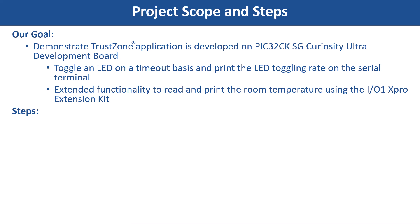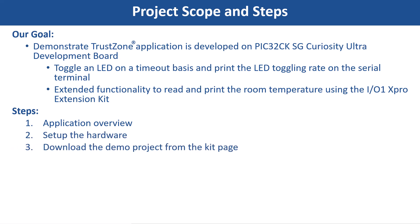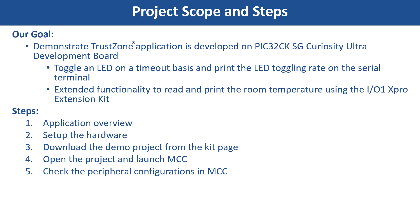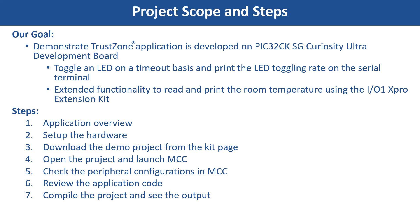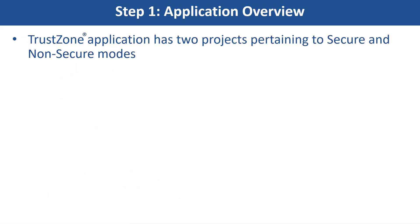To achieve this, first, we will show you the application development overview, set up the hardware, download the project from the Kit page, open the project and launch the MCC. Check the peripheral configurations in the MCC, review the application code and then compile the project and see the output. Let us now look at how a TrustZone-based application is developed.